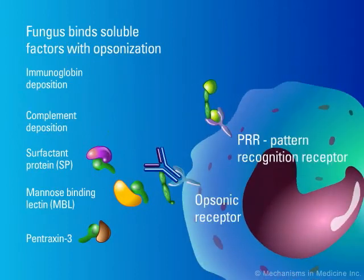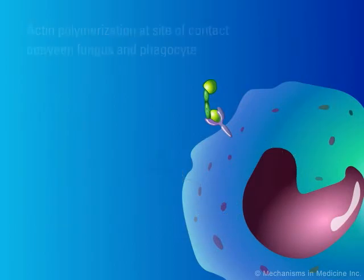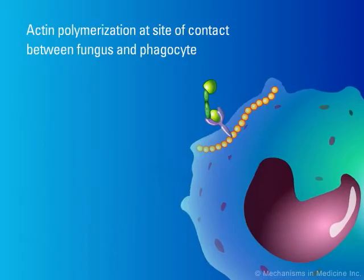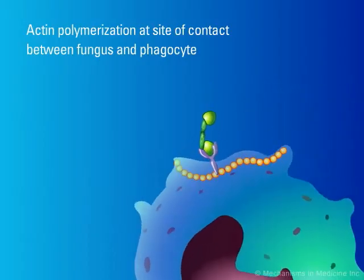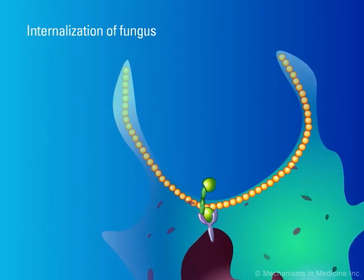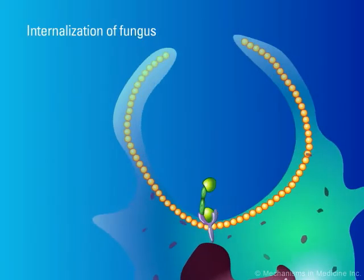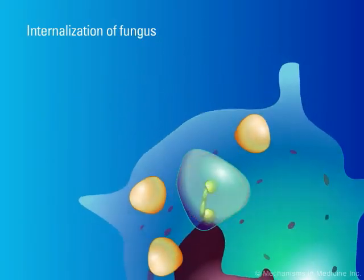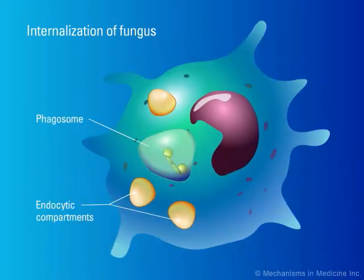Phagocytes recognize and bind to opsonized and non-opsonized fungi via pattern recognition and opsonic receptors. Bound fungi induce actin polymerization and initiate phagocytosis. Fungi are engulfed and internalized by phagocytes.